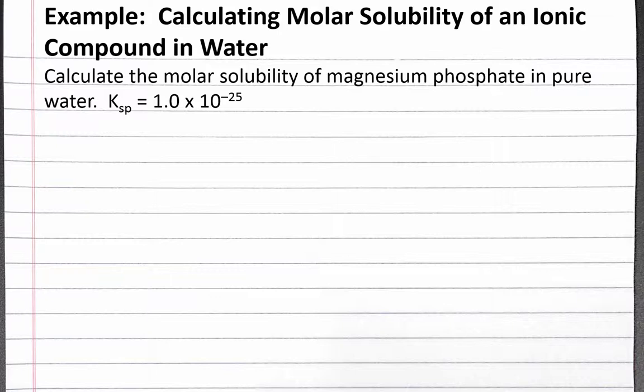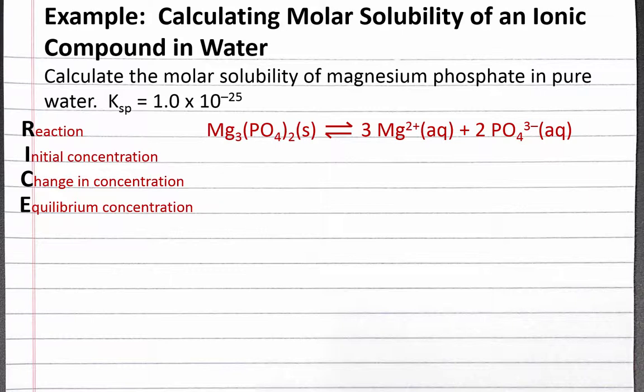We'll start by creating a RICE table for the dissolution of solid magnesium phosphate in water. When one formula unit of magnesium phosphate dissolves in water, it produces three magnesium ions and two phosphate ions. We don't need to keep track of solid magnesium phosphate in our RICE table because solids are not in our equilibrium constant expression.